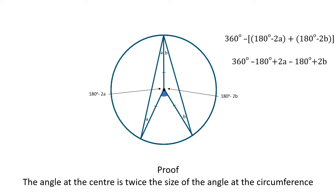We expand and collect like terms and factorise to get 2a plus b. The angle at the circumference is a plus b, so this proves that the angle at the centre is twice the size of the angle at the circumference.